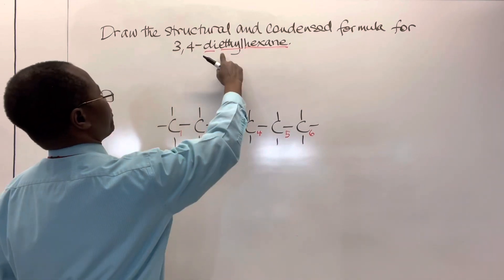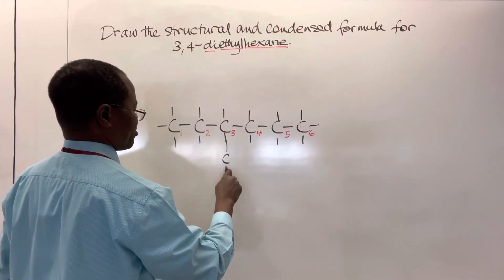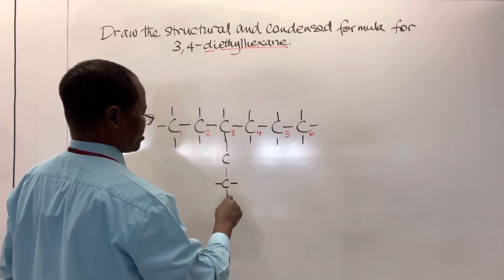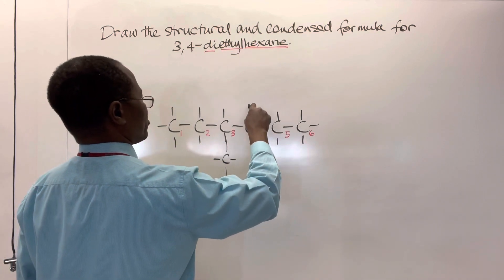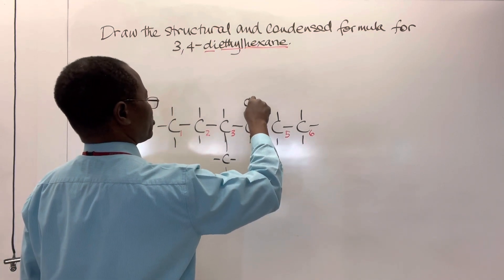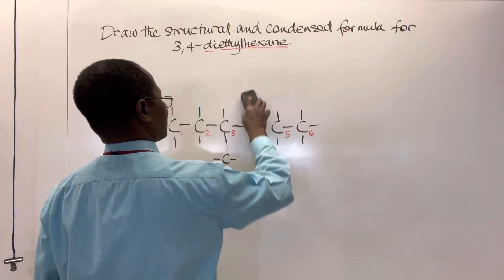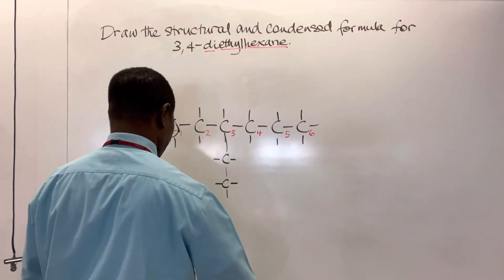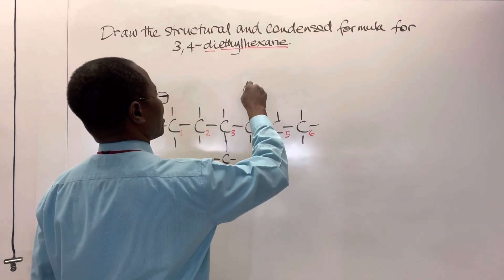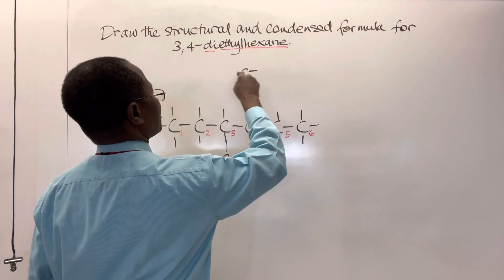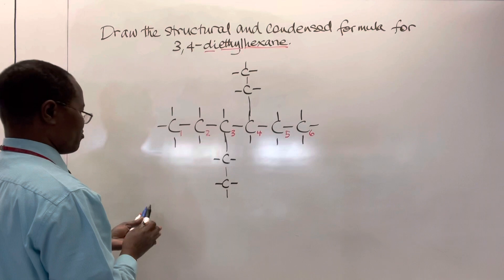So on carbon number three, we extend — ethyl comes from ethane, which has two carbons. So we have two carbons as a branch there. And on carbon number four we also have an ethyl group, which also has two carbons. Let me extend this to look clean — these are the branches.